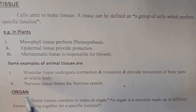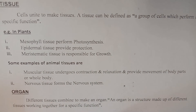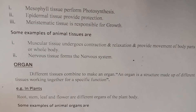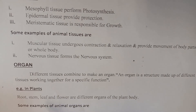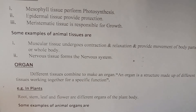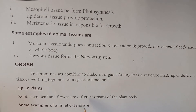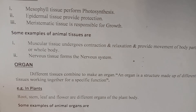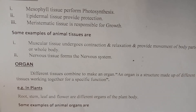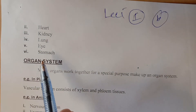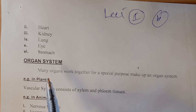An organ is a large unit of biological organization in which many tissues combine together to form it. In plants, examples of organs are root, stem, leaf, and flower. Examples of animal organs include brain, heart, kidney, lungs, eye, and stomach.